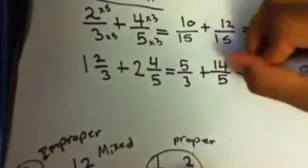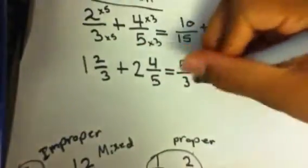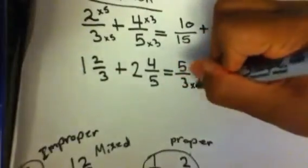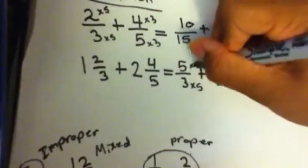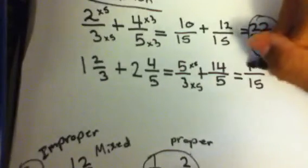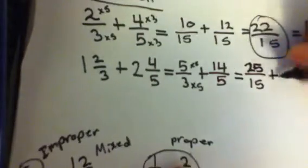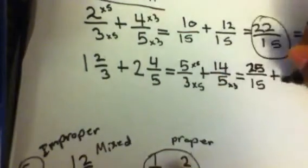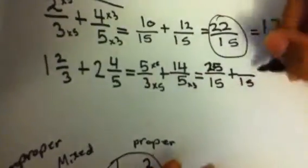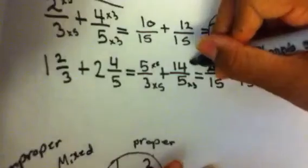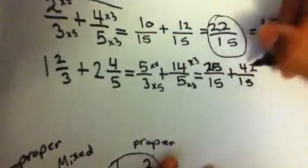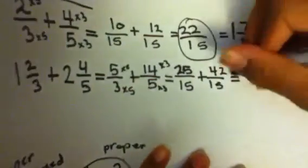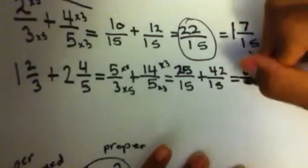Now all you have to do is the same thing as before — change the denominators to be the same. The common denominator is 15. So 3 times 5 equals 15, and then you do the same thing for the numerator. And for the other fraction, 5 times 3 equals 15, and 14 times 3 equals 42. Now you add them together, and you get an answer of 67 over 15.